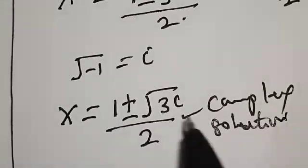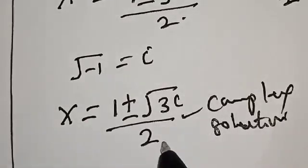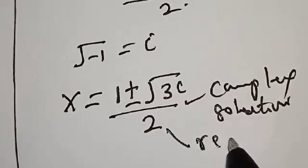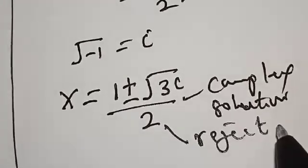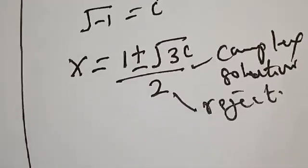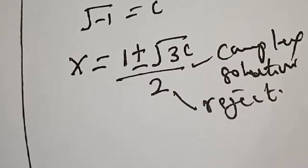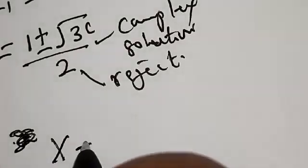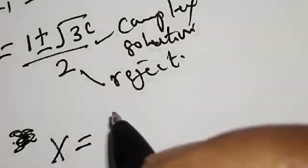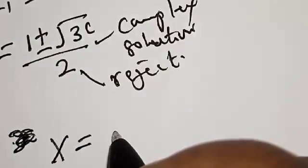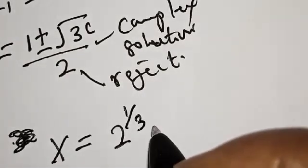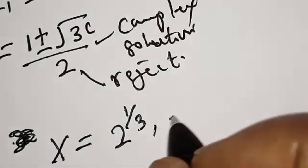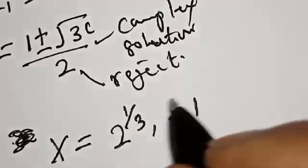We reject this complex solution, and the only true real solutions we have now are s equal to 2 raised to power 1 over 3 and s equal to minus 1.